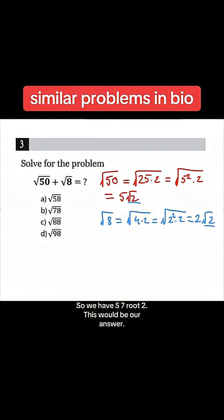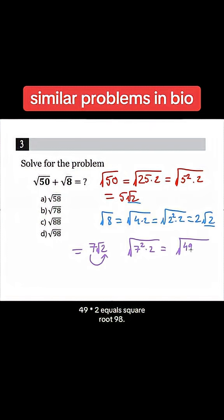This would be our answer. Now looking at these answer choices, none of these are the same. So what if we put the 7 back into the square root? Well, in order to do that we would have to square it inside, right? So this would be 7² × 2 = 49 × 2 = √98.